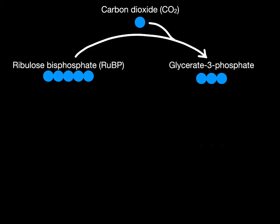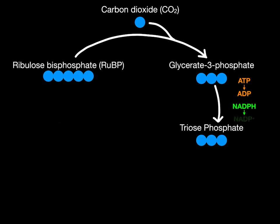In the next stage, the glycerate three phosphate becomes another three carbon molecule known as triose phosphate. In order to convert glycerate three phosphate to triose phosphate, ATP is required and breaks down into ADP. In addition, it is here that we use the NADPH from the light dependent reactions of photosynthesis. The NADPH is oxidized into NADP+, and the electrons released from this oxidation are gained by the glycerate three phosphate in the process of forming triose phosphate. Therefore this is reduction of glycerate three phosphate.